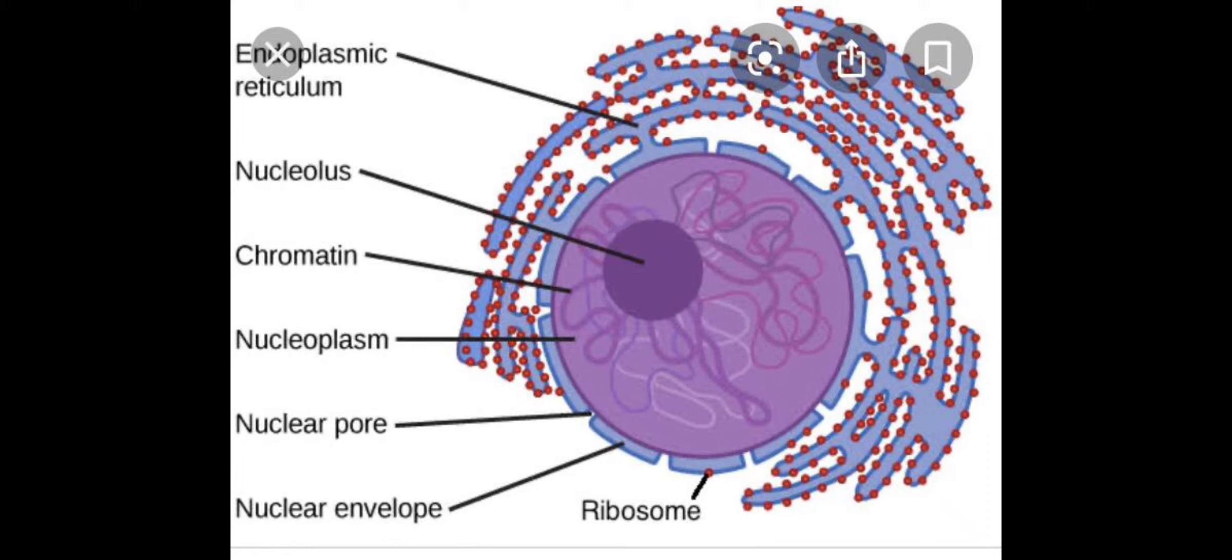So this is all about the most important cell organelle which acts as the brain. The nuclear envelope separates the cytoplasm and the nucleoplasm. Besides that, the major work of nucleolus is to synthesize the RNA. So these are all the parts of the nucleus.